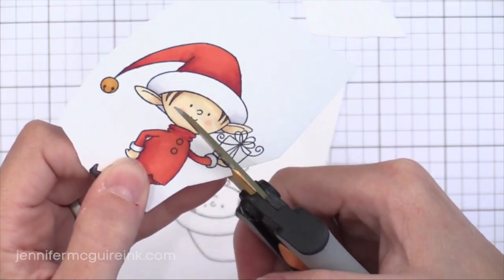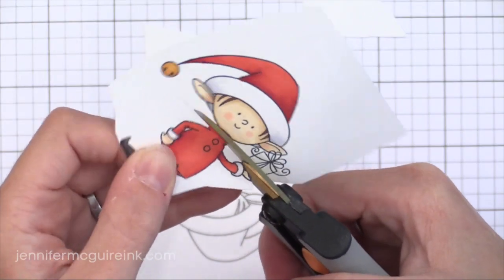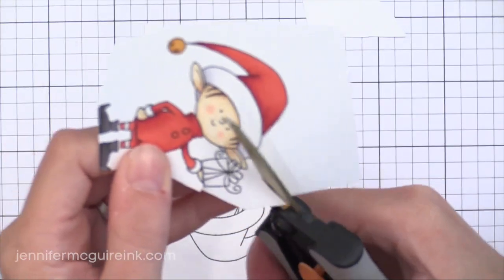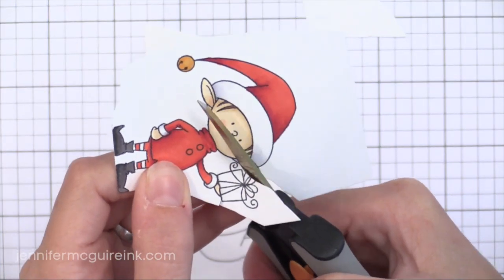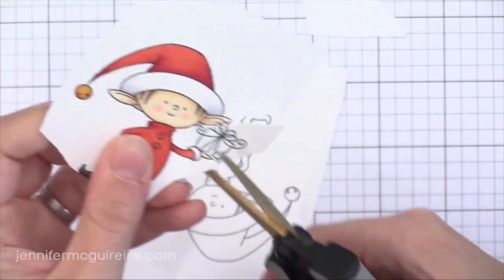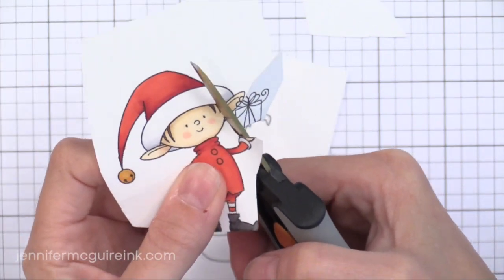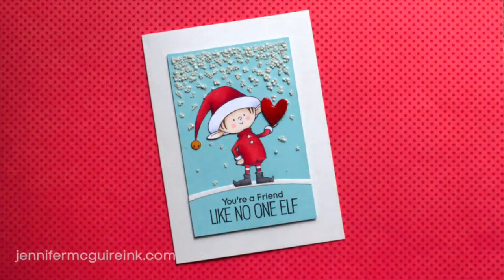There are matching dies available but I wanted to cut this little present out of his hand so I could replace it with a heart. I really like to fussy cut and cut right up to the edge of the image so that's what I decided to do here. But by all means you could use the matching die to cut it out and then just cut the present off of the result.